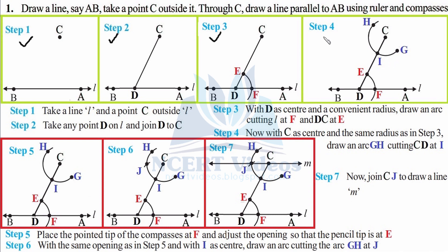Step five: place the pointed tip of the compasses at F and adjust the radius to reach E — you are measuring the distance from F to E. Put your needle at F and open your compasses so the pencil tip falls exactly on E. That is your step five.